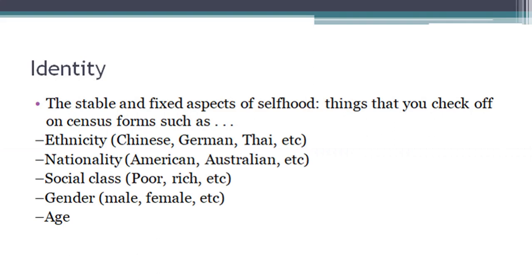Identity hamare selfhood ke woh aspects hote hain jo ke stable hain, jo ke fixed hain. Hamare basic chizein, hamare originality jo hai, that is identity. Hamare stable or fixed aspects mein kya kya chizein aati hain? Hamare ethnicity, hamare origin — we are from Chinese culture, we are from German ethnicity, hem kahan se belong kerti hain — yeh hamare identity ka part hai. Hamare nationality, for example I am a Pakistani so this is included in my identity. Social class — you are middle class, poor, rich — everything included in your social life, your gender and your age. Toh simple words mein identity is something that is stable or fixed that makes you an individual different from others.